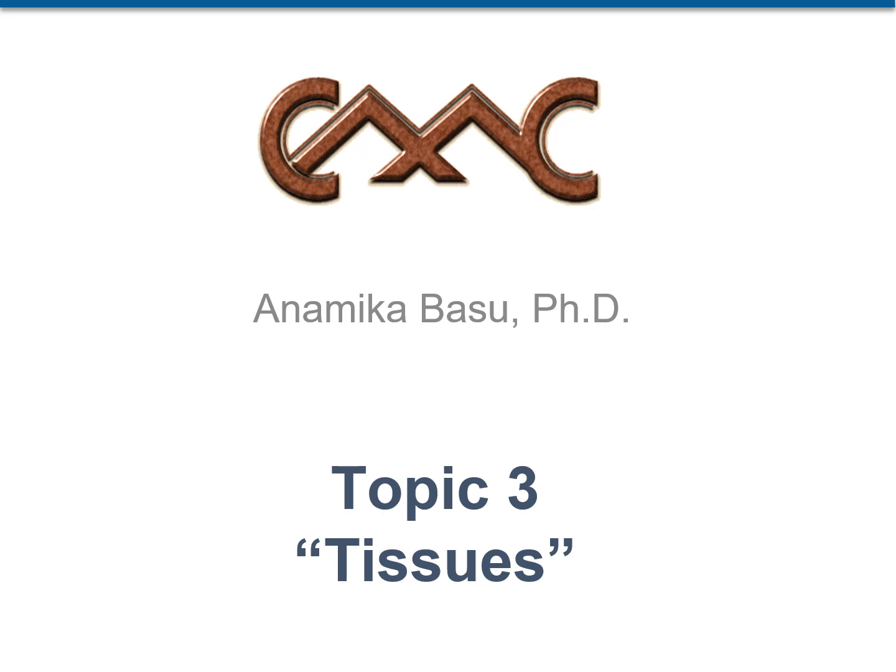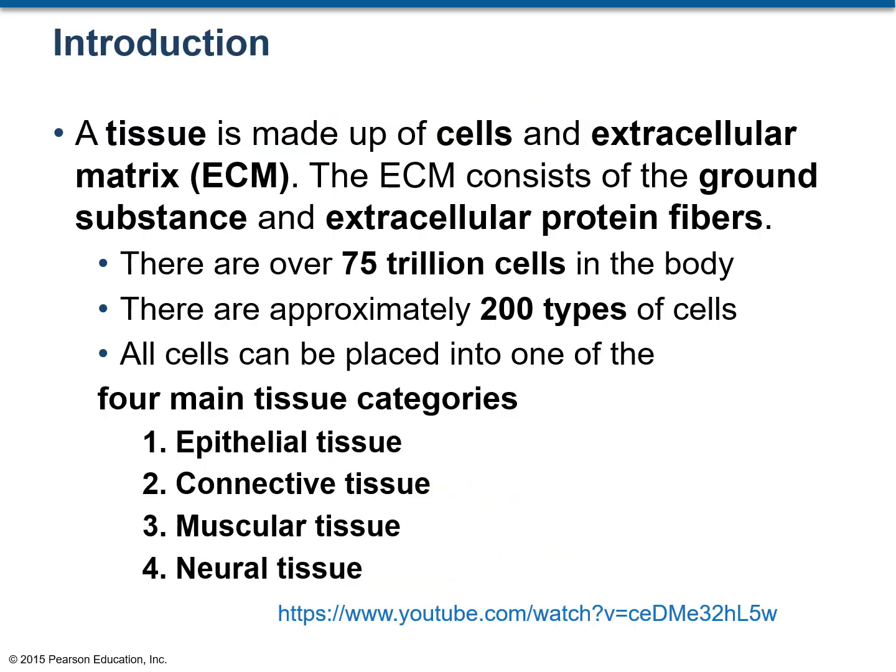Hi everyone, this is topic 3 of the human anatomy class and this topic will introduce you to tissues. The study of tissues is known as histology. A tissue consists of cells and a non-cellular part which is known as the extracellular matrix or the ECM. The ECM in turn is made up of two components: the ground substance and the extracellular protein fibers.